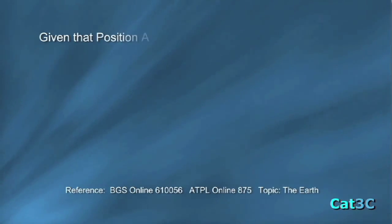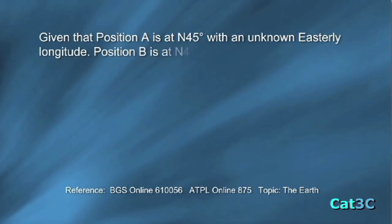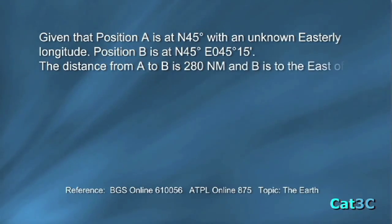Given that position A is at north 45 degrees with an unknown easterly longitude, position B is at north 45 degrees, east 45 degrees and 15 minutes. The distance from A to B is 280 nautical miles and B is to the east of A. What is the longitude of position A?